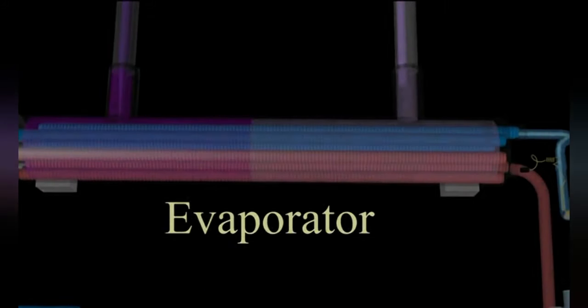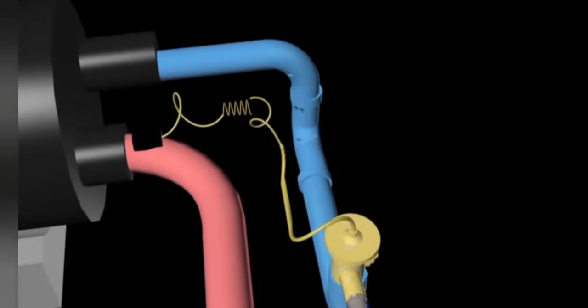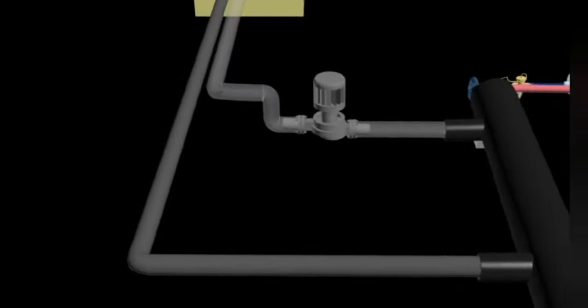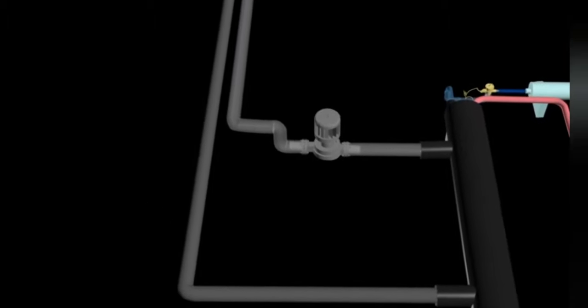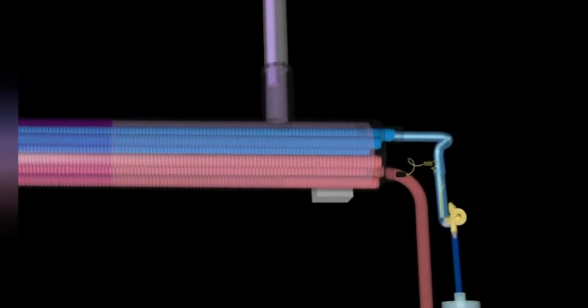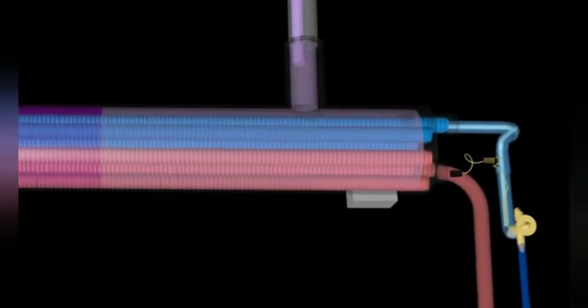The refrigerant in low pressure liquid form coming out from the expansion valve flows into the evaporator at low temperature. In the evaporator, heat from the chilled water returning from the air handling unit is absorbed by the refrigerant due to the temperature difference. When the low temperature, low pressure liquid refrigerant absorbs heat from the chilled water, it evaporates into low pressure gas.